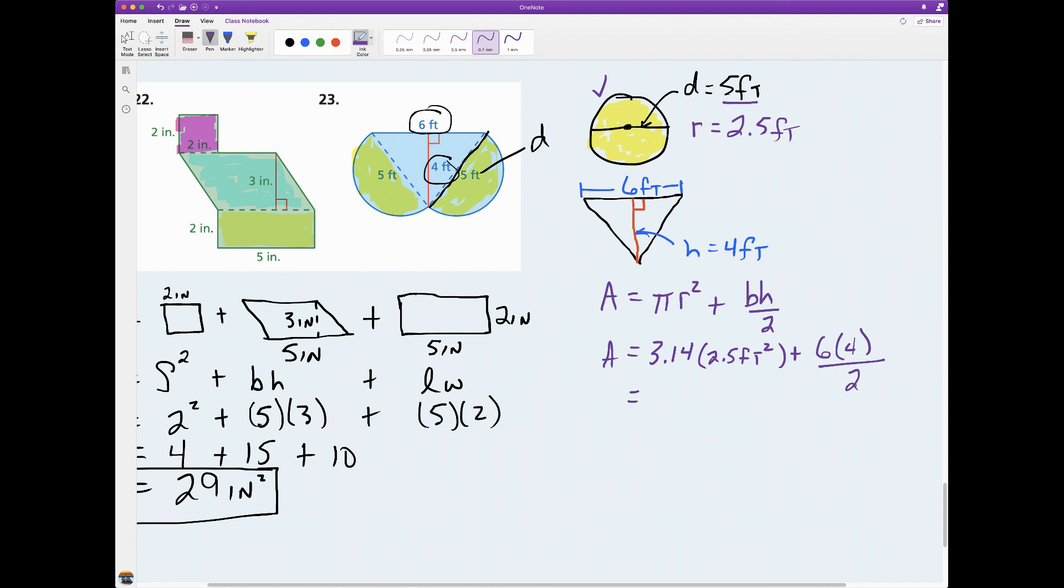I can cancel with the 6 and the 2, so really that's 3. Let's see, 2.5 squared times 3.14, I get 19.625 feet squared. And then over here I just have 3 times 4 which is 12. To get my final answer I add those two numbers together and I get a grand total of 31.625 feet squared.